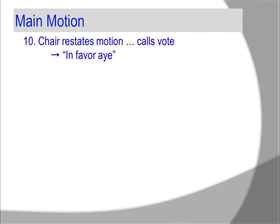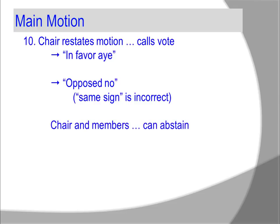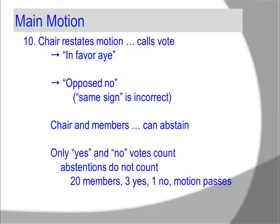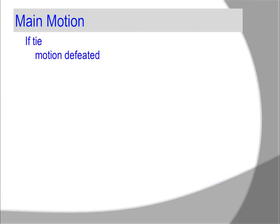The chair restates the motion and calls for the vote: 'All in favor, aye. All opposed, no.' The chair and members can abstain; however, only yes and no votes count. Abstentions do not count. If there are 20 members present, three say yes and one says no, the motion passes. If it is a tie, the motion is defeated. If the vote is not clear, the chair calls for a visual count — it is easier to count members standing than to count arms and hands waving. A member may call division of assembly, which forces a visual count.